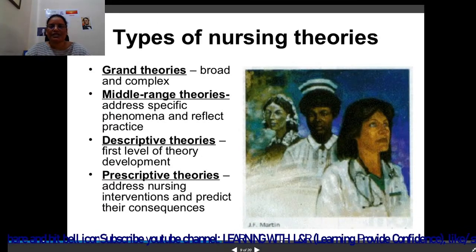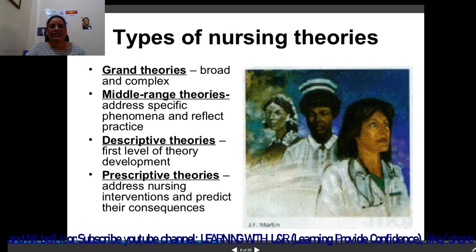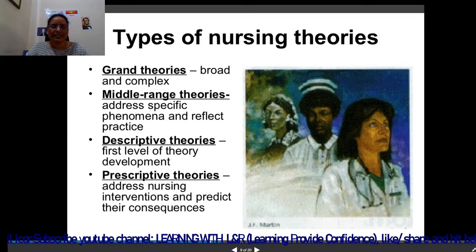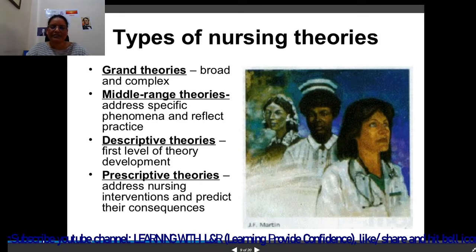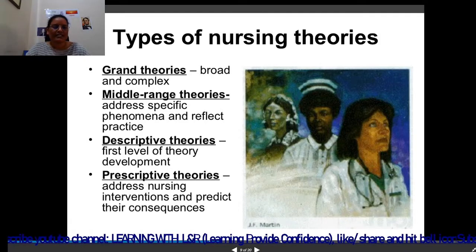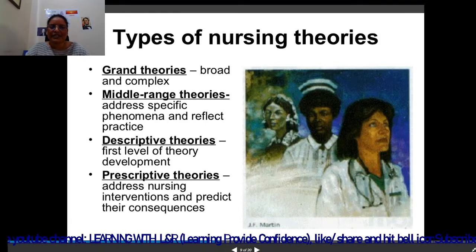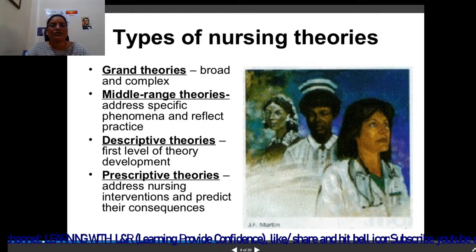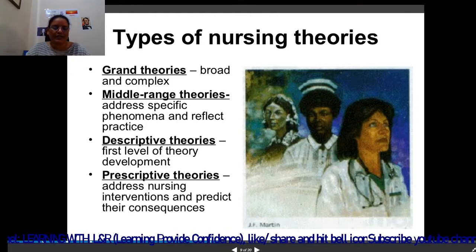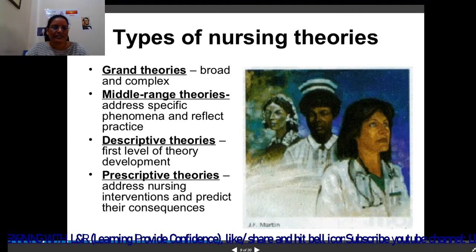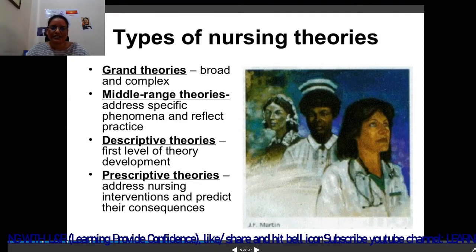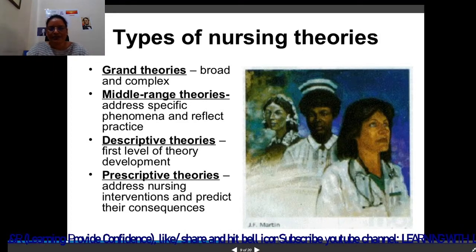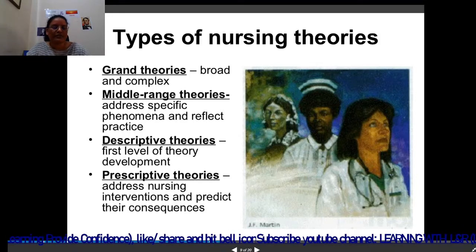The next is types of theories. There are different kinds of theory. Grand theory is a very complex or broad theory. Then middle range theory — in middle range theory, some specific idea or specific phenomenon is described. Descriptive theory is for beginners; it is the first level of theory development, where we begin to develop the theory with the help of descriptive theories. Prescriptive theories address nursing interventions and predict their consequences — we apply our phenomena and concepts to patient care and wait for the consequences, which might be positive or negative.